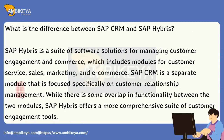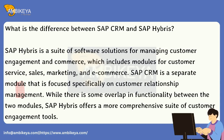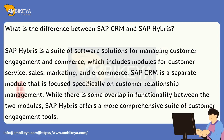What is the difference between SAP CRM and SAP Hybris? SAP Hybris is a suite of software solutions for managing customer engagement and commerce, which includes modules for customer service, sales, marketing, and e-commerce. SAP CRM is a separate module focused specifically on customer relationship management. While there is some overlap in functionality, SAP Hybris offers a more comprehensive suite of customer engagement tools.